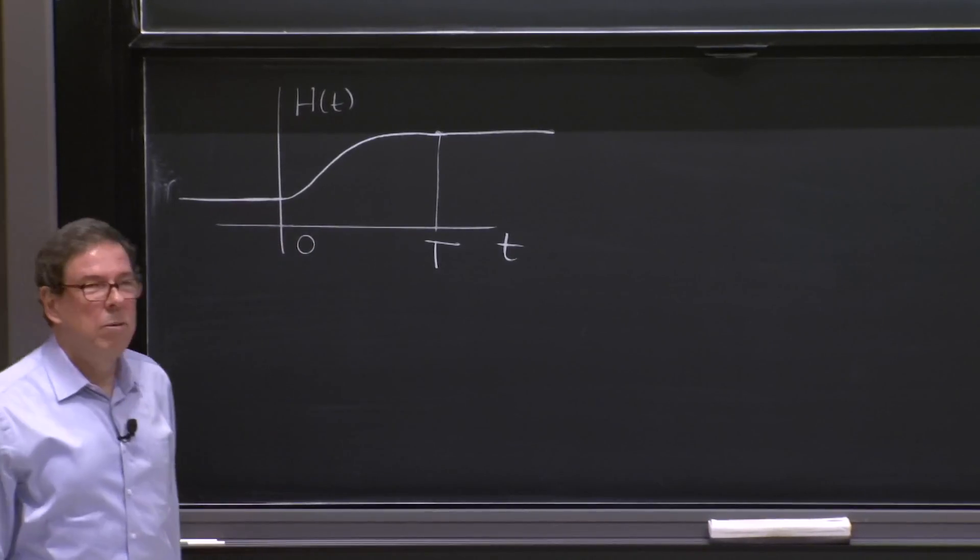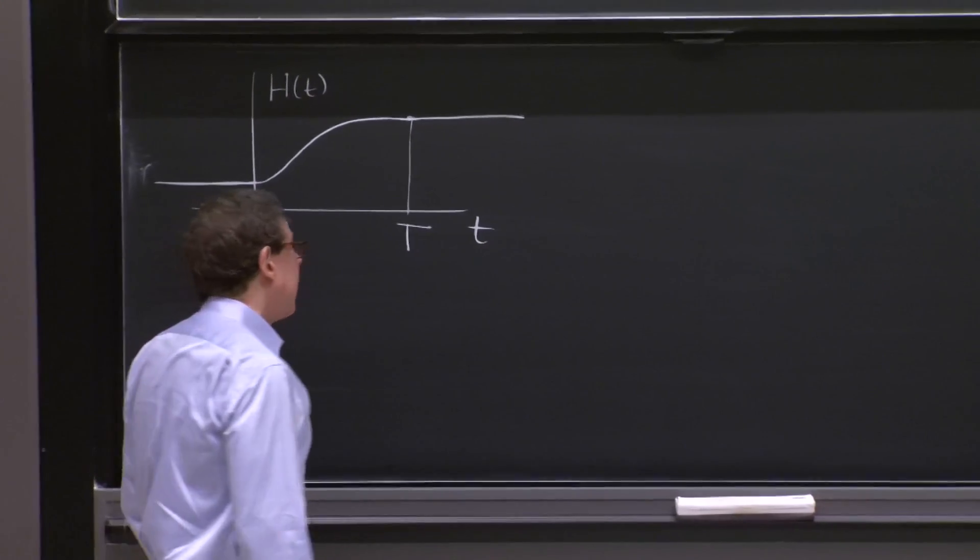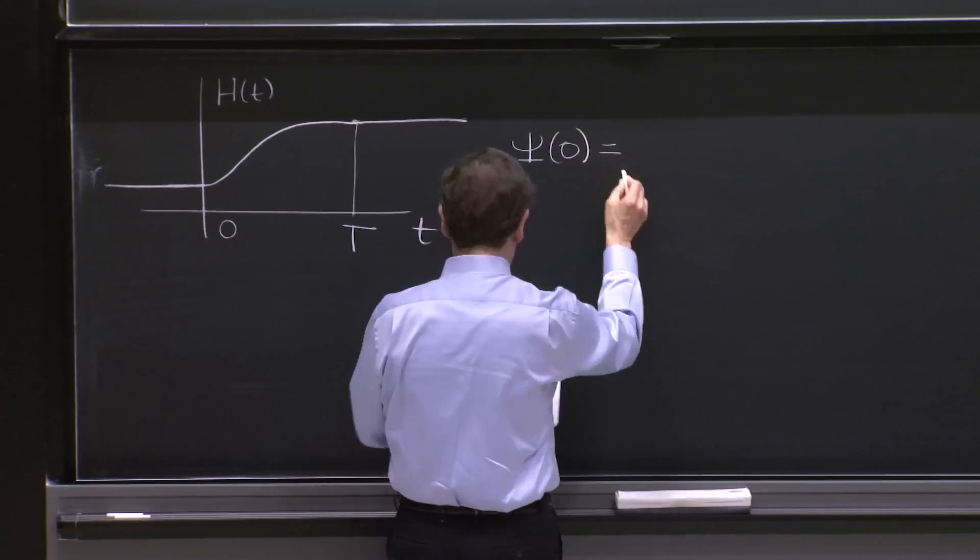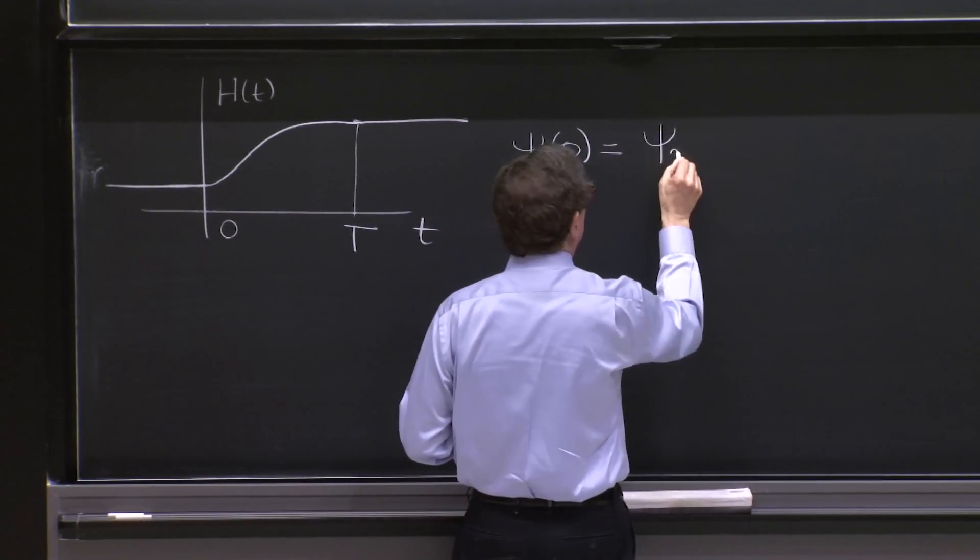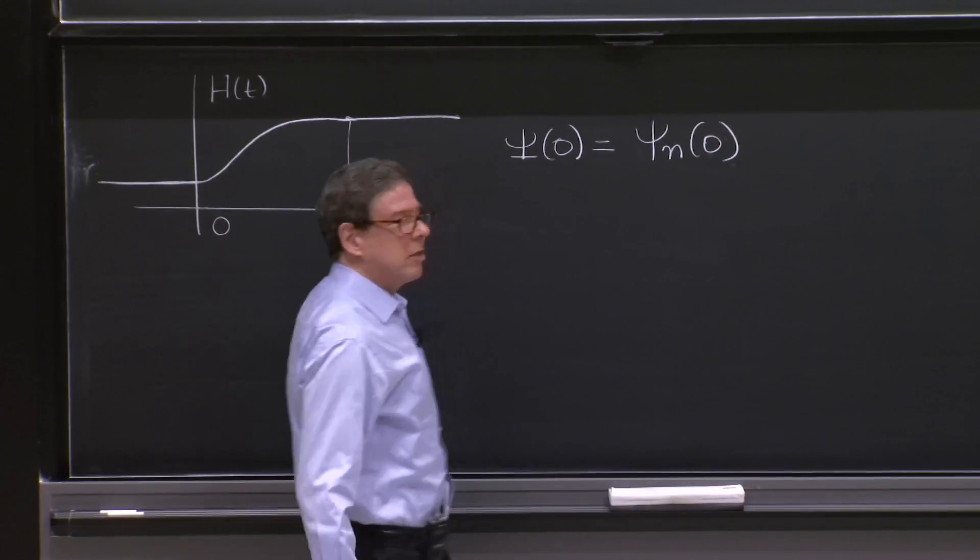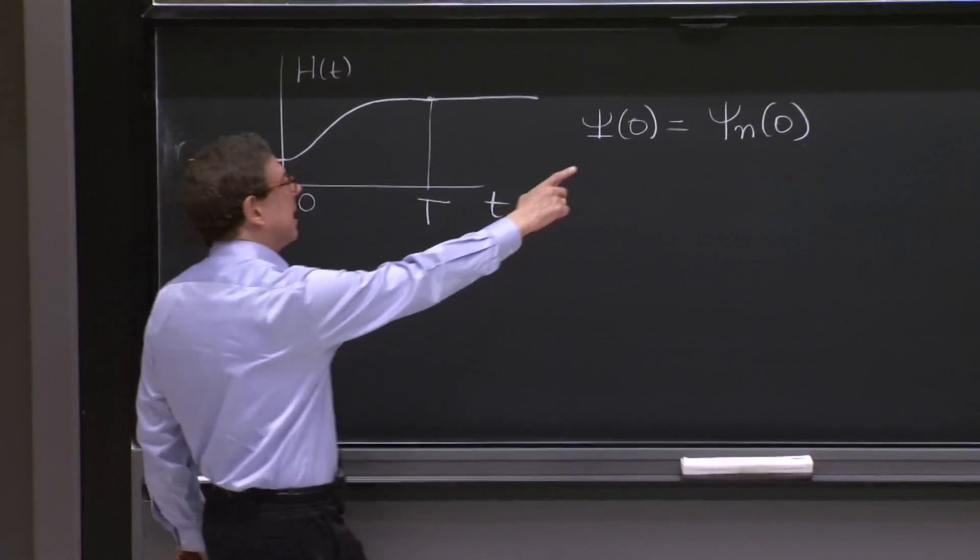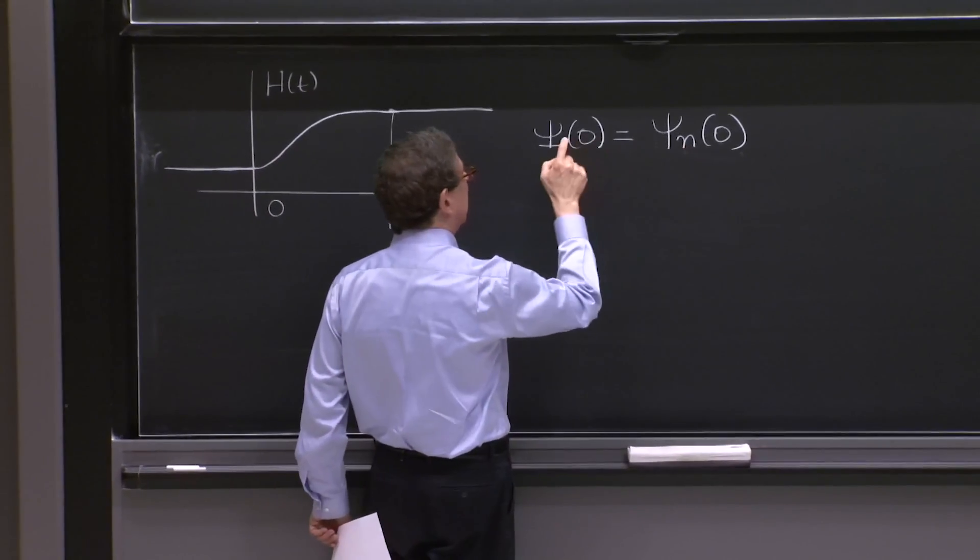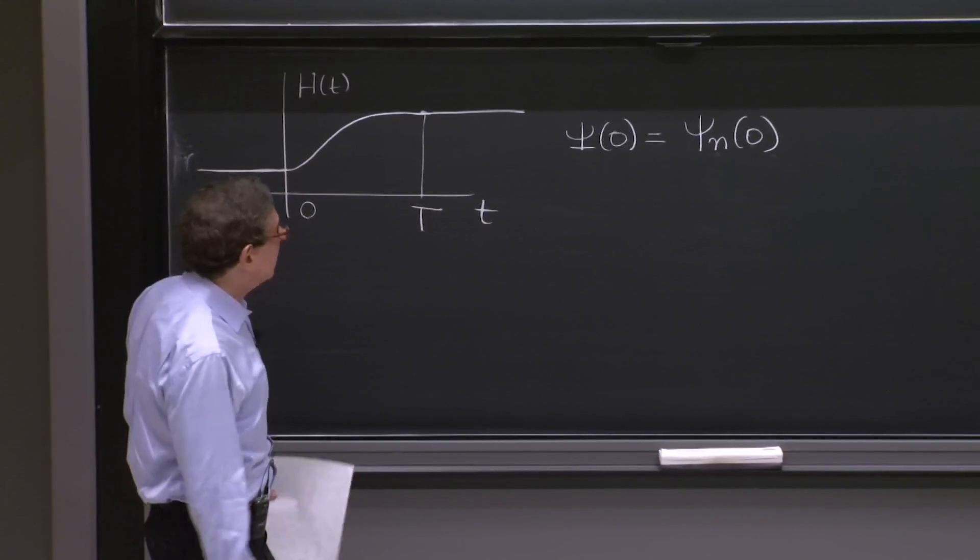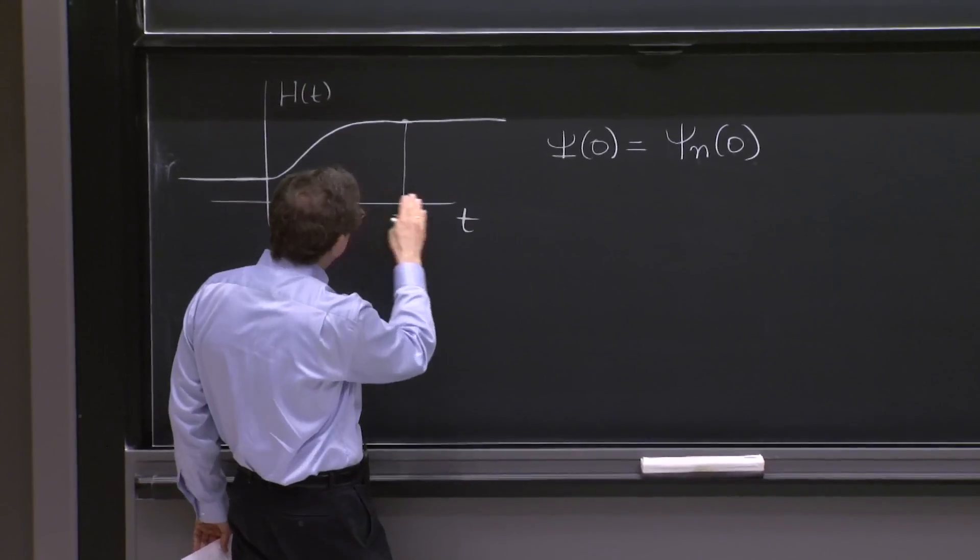So the Hamiltonian changes like that. And the adiabatic theorem states that if you have a state at time equals 0, which is a particular instantaneous eigenstate, that is the instantaneous eigenstate. And that's the full wave function at time equals 0. And it coincides.